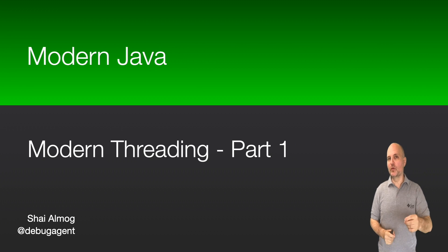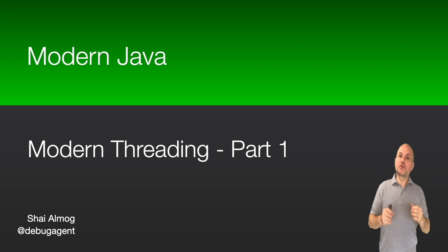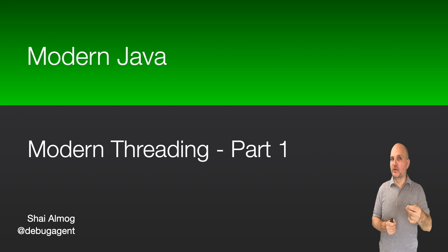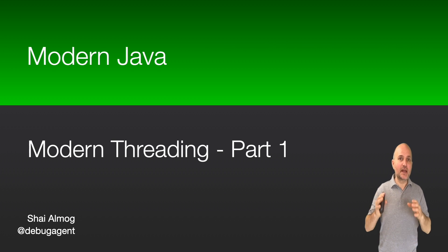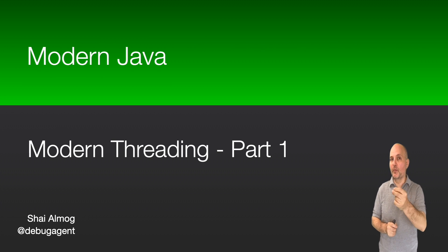Hello everyone, and welcome to the Modern Java course. We talked about threading before when talking about Loom, but there's so much more. Java was the first major language to incorporate thread primitives into the language itself. I still gravitate towards these primitives out of habit — that's a mistake. Modern Java has much better solutions than synchronized, wait and notify. In this video, we will dive into some of those core capabilities.